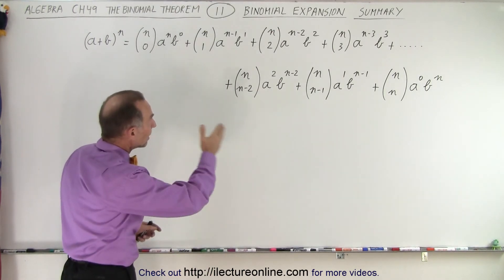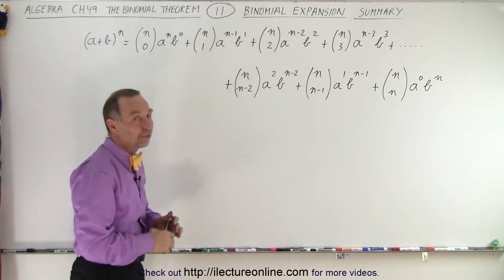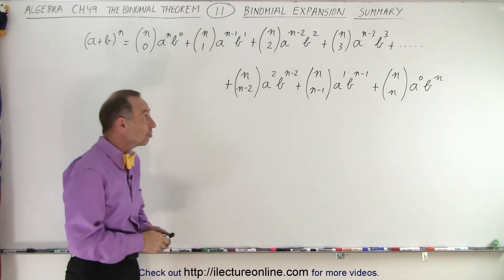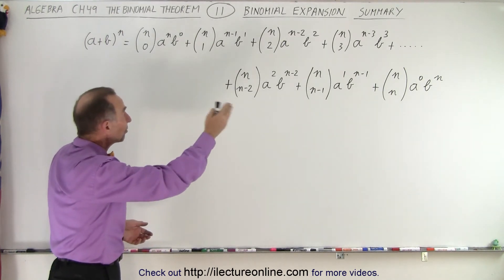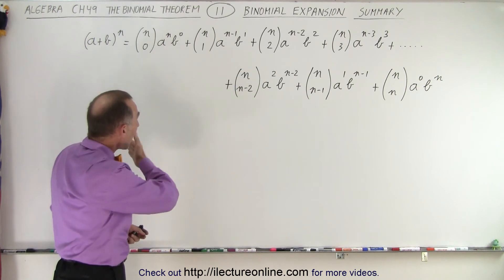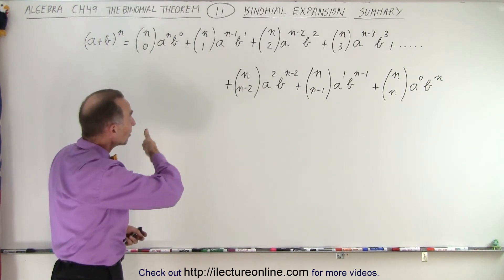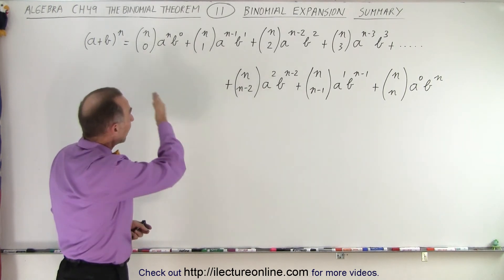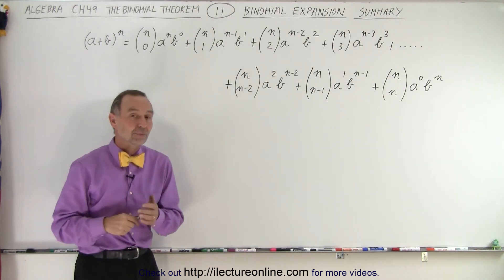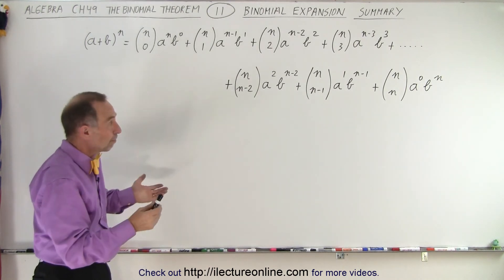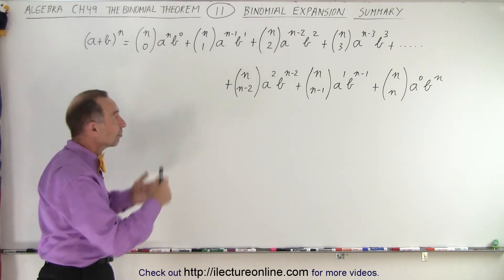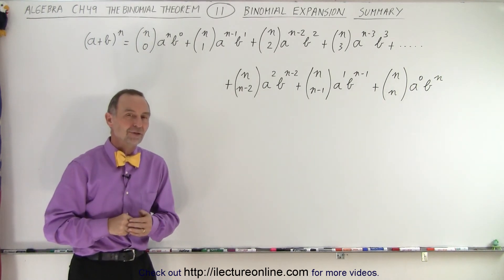So this is how we write out the general format of the expansion, the binomial expansion, indicating the symmetry, and also indicating how each coefficient and how each exponent is written out, and you can see the pattern in each of those exponents and coefficients. So that's simply the summarized form of the binomial expansion.